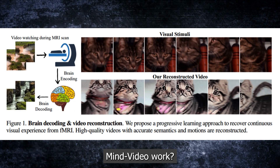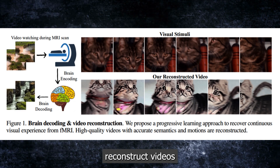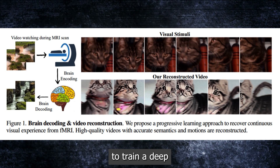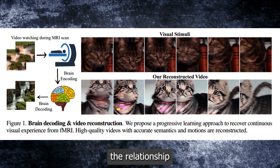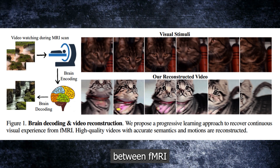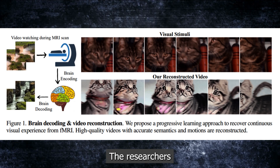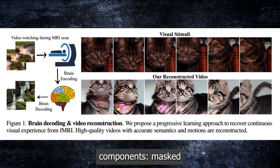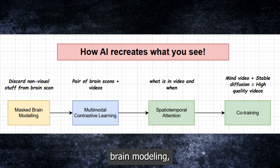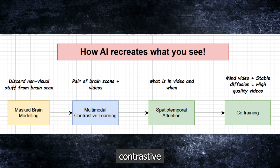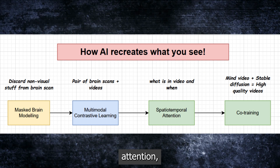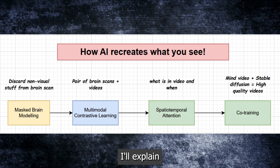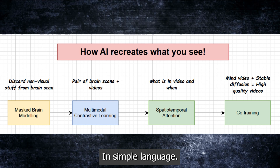So how does Mind Video work? How can it reconstruct videos from brain activity? The basic idea is to train a deep learning model that can learn the relationships between fMRI data and the video frames. The researchers designed a novel framework that consists of four main components: masked brain modeling, multimodal contrastive learning, spatiotemporal attention, and co-training. If the terms sound complicated, don't worry — I'll explain each of them in detail and simple language.